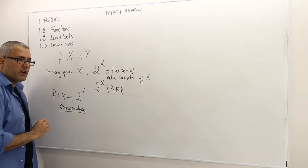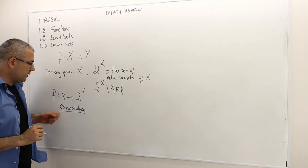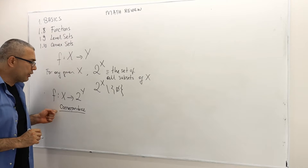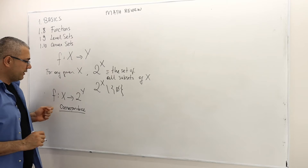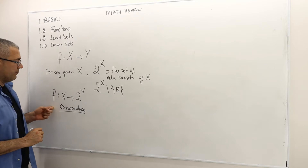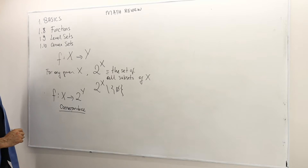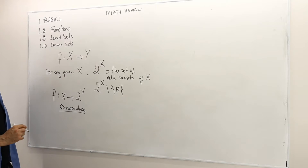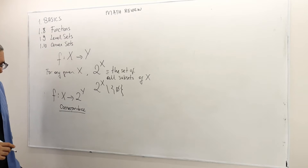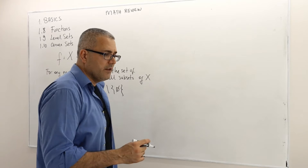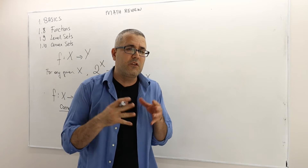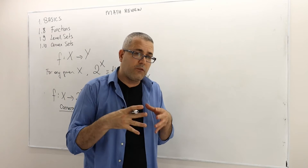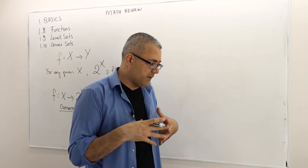We are going to come across with the term correspondence in game theory, for example. Functions can be continuous or not — the formal definition of continuity is highly complicated, but it basically means there is going to be no jump.